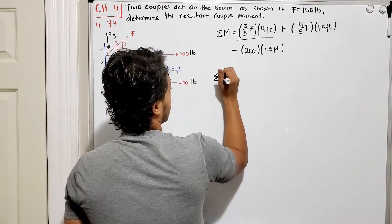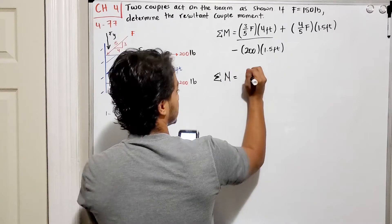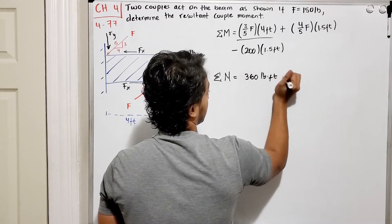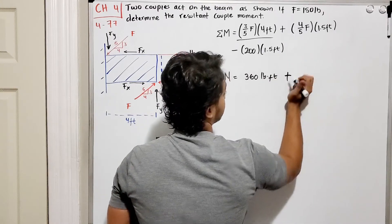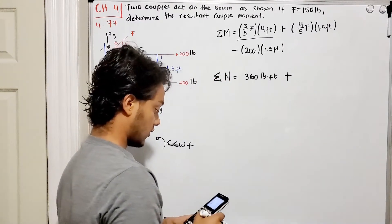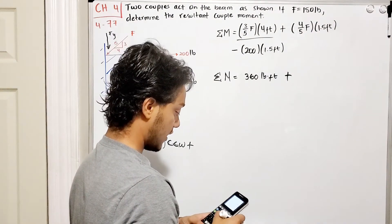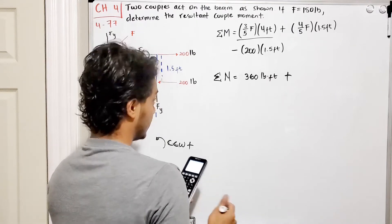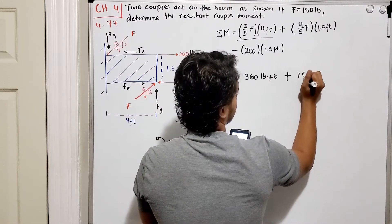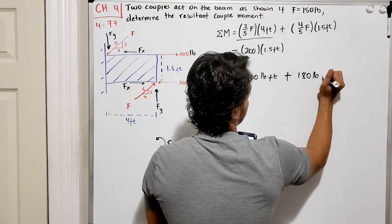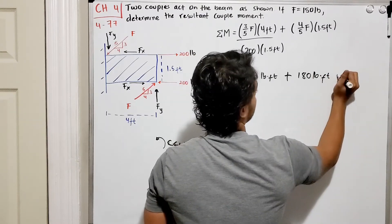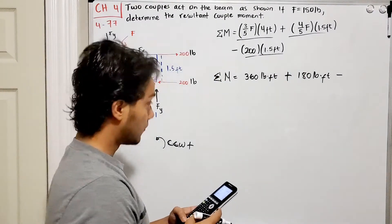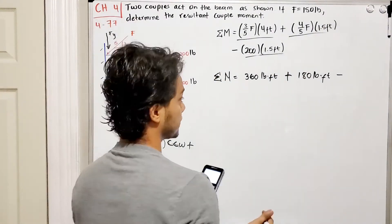The sum of my moments is going to be equal to 360 pound-feet plus - in this case we're gonna have 4 out of 5 multiplied by my F which is 150 multiplied by 1.5, and that gives me 180 pound-feet. And we have minus - 200 multiplied by 1.5, which gives me 300 pound-feet.